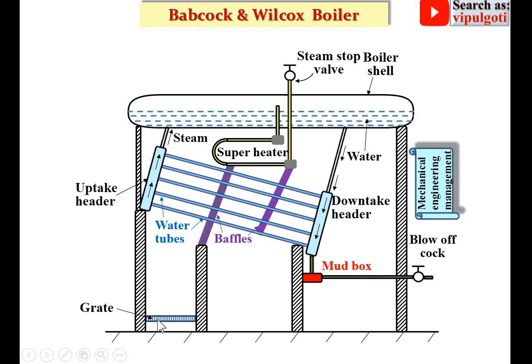This is the grate where coal is supplied with the help of the fire hole. This is the furnace, and the ash is collected at the lower portion of the grate — that's why this portion is known as the ash pit.